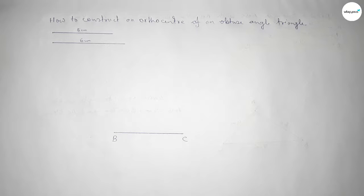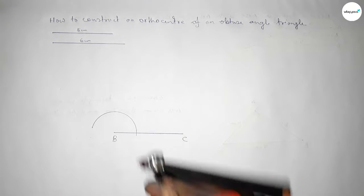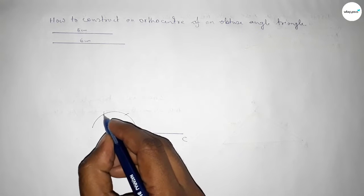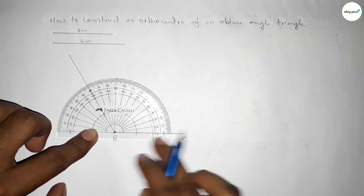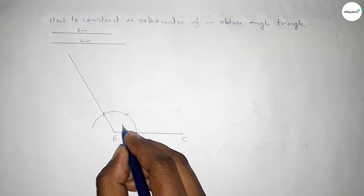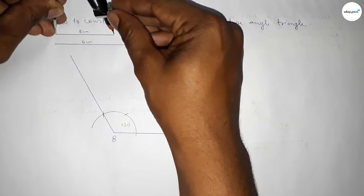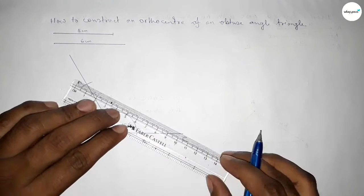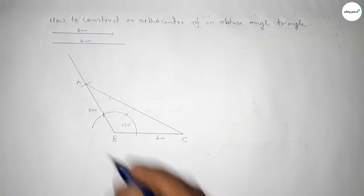We have to draw an obtuse angle triangle whose at least one angle is greater than 90 degrees. Constructing here a 120-degree angle by using a compass — putting the compass and cutting arcs so both curves intersect at a point, giving a 120-degree angle. Then taking the length five centimeters by compass, putting it on point B and cutting to get point A. Joining A and C — this side is six centimeters and this side is five centimeters — so we got an obtuse angle triangle.